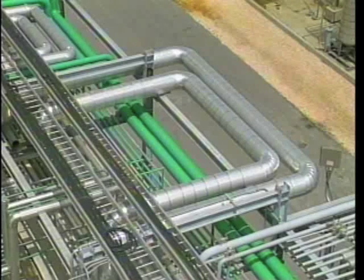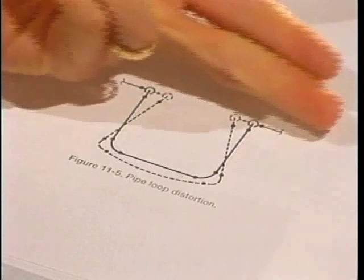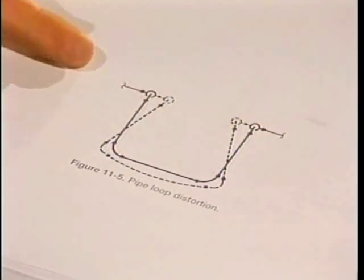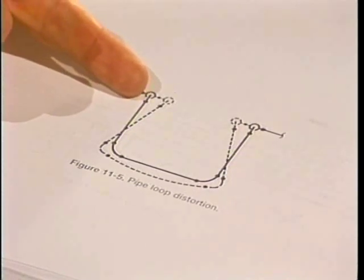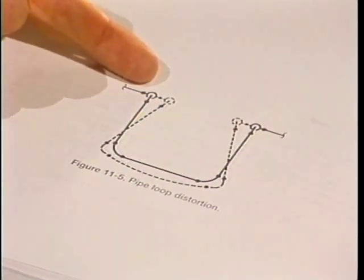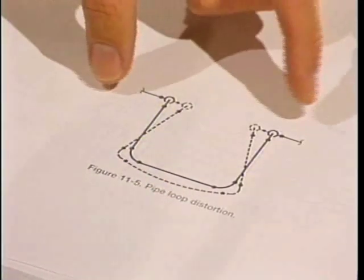In situations where you have long runs of straight pipe, we must incorporate a pipe loop. A pipe loop is simply a U-shape manufactured or fabricated into the long pipe run. You typically find these in a pipe rack where there are continuously long runs of pipe and you must account for expansion. As expansion occurs, the elbows grow together, distorting the U-shape and thereby absorbing the expansion.